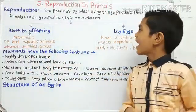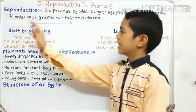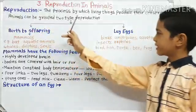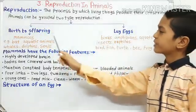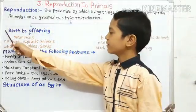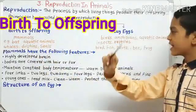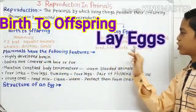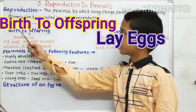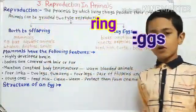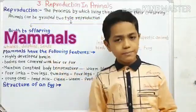Animals can be grouped into two types on the basis of their reproduction: animals which live-birth their offspring, and animals which lay eggs. Animals which live-birth their offspring are known as mammals.